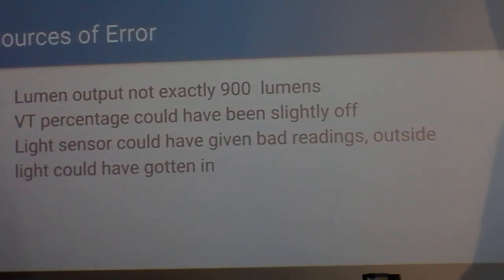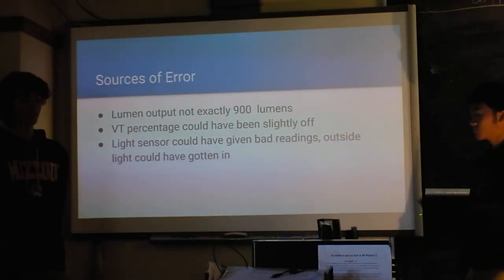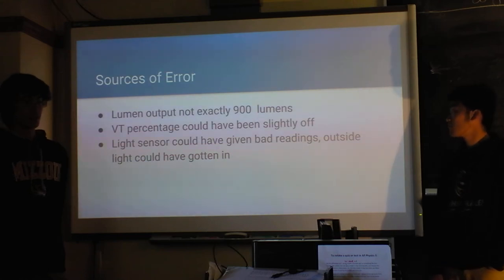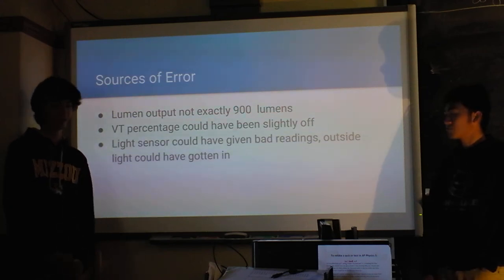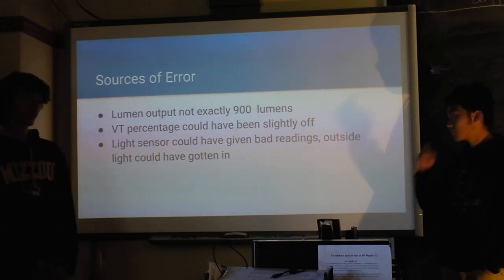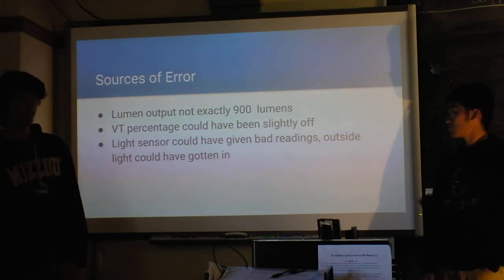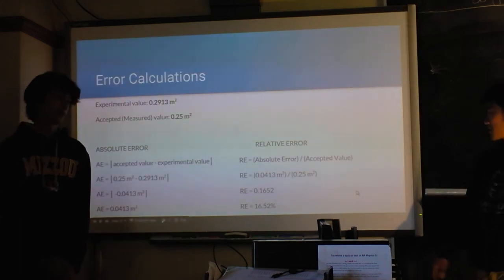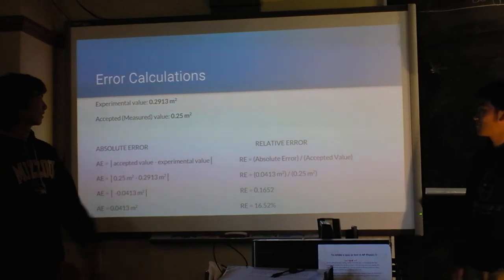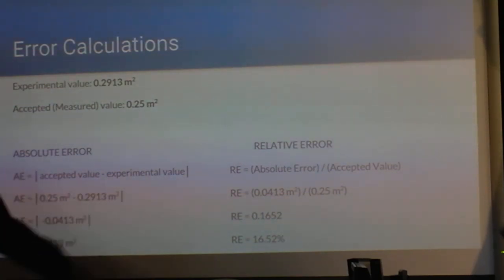Our sources of error would probably be the light source not being exactly 900 lumens. The visible transmittance could have been slightly off from what it read, and maybe not all of the light went through the glass filter when we took data. That's our error calculation — we were pretty close from our graph, off about 4 centimeters, which is about 16% error.